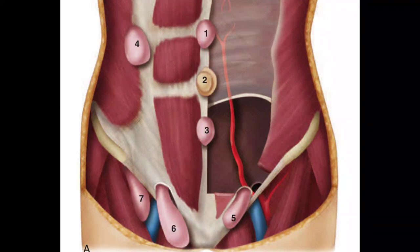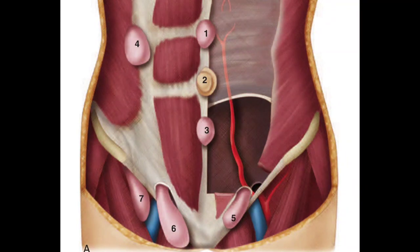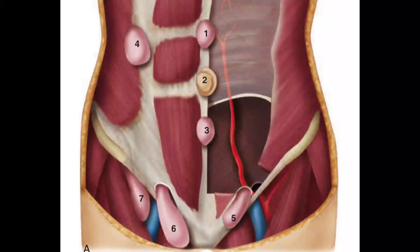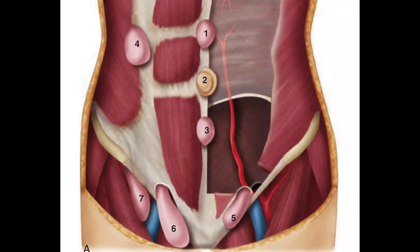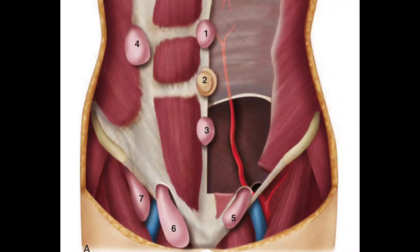Normally for the supra and infra, both are combined under the term para-umbilical hernia, but para-umbilical is a bit confusing — you are not sure whether it is supra- or infra-umbilical type. If you want to be more concise, just mention supra-umbilical hernia or infra-umbilical hernia. Number four is the area where most commonly spigelian hernia occurs.